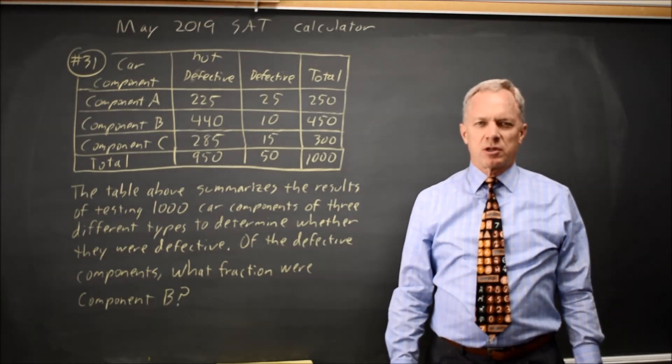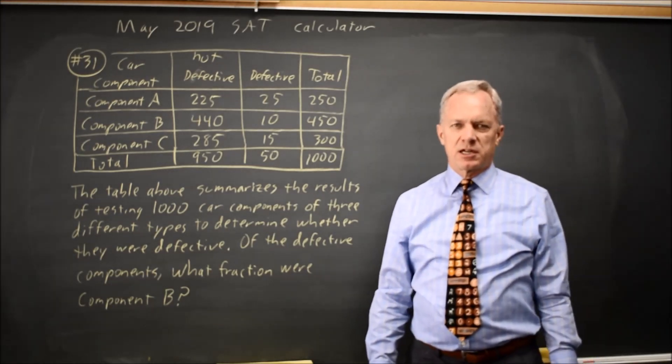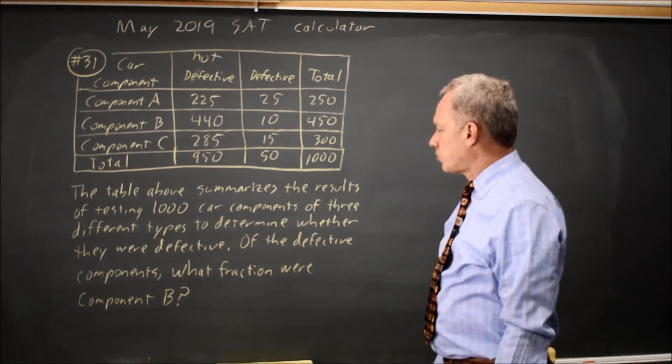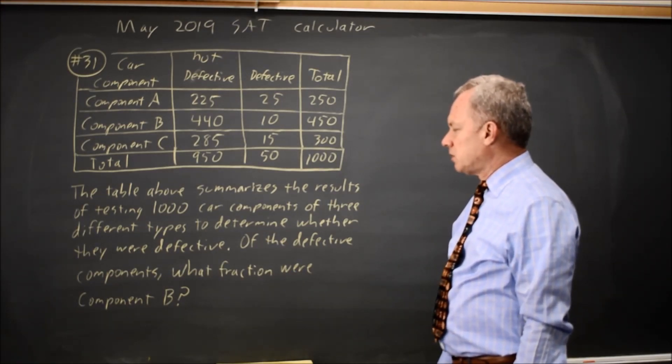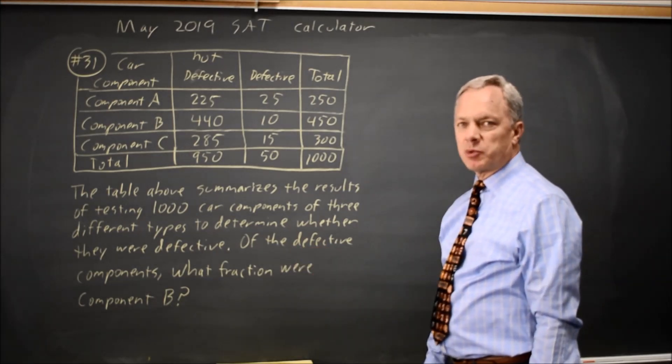This is calculator question number 31 from the May 2019 international exam. College Board is asking for the fraction of defective components that were component B.